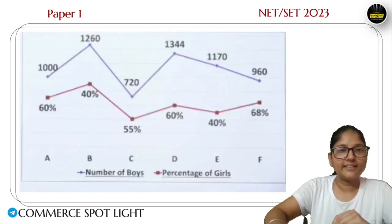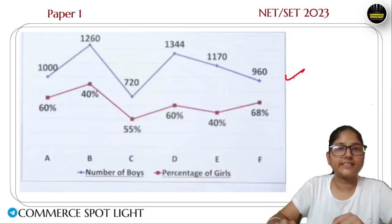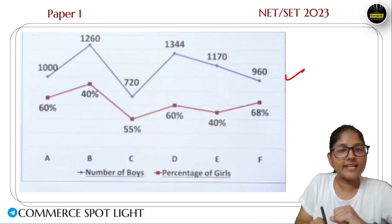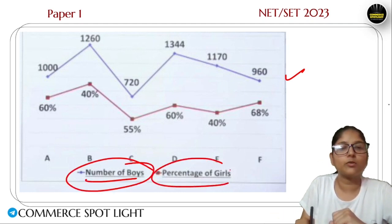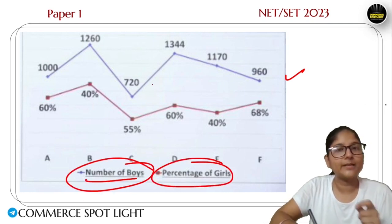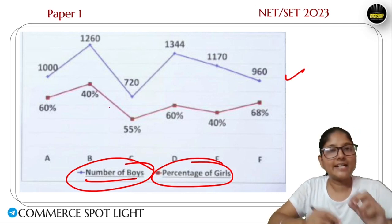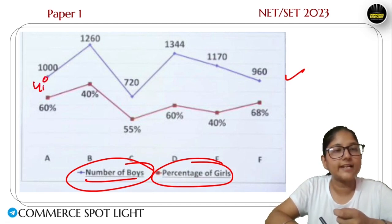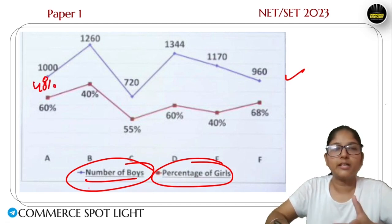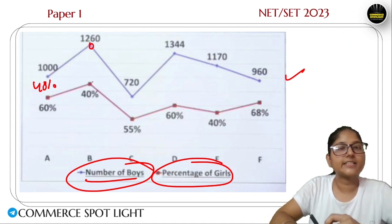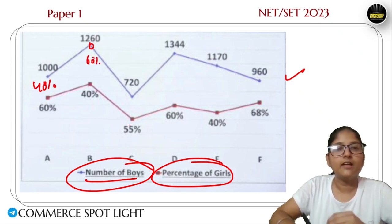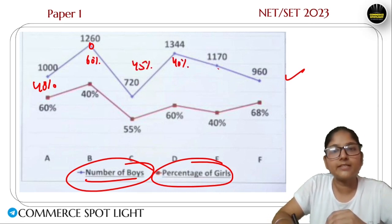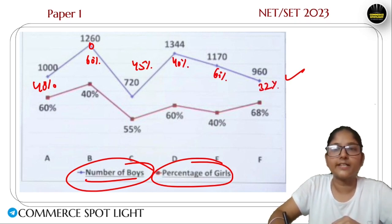Here is a surprise for you: this particular DI was originally a line graph based DI, which I converted into table form. It becomes easier to work with in table form. In the line graph, the number of boys is represented by blue lines and the percentage of girls by red lines. So if girls are 60%, boys are 40%. If boys' value is 1000, girls are 60%. Similarly, 1260 means 40% girls, 55% girls means 45% boys, and 32% boys' value applies to College F.